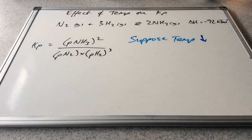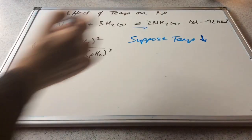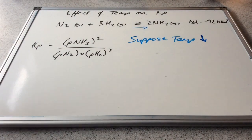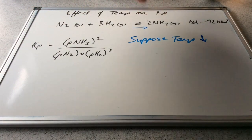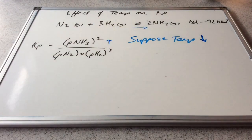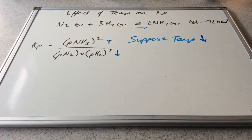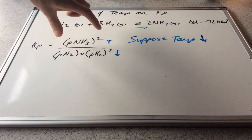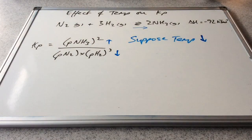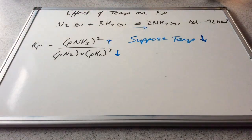Conversely, if the temperature is decreased, that favours the exothermic direction, so the equilibrium shifts to the right. We'll have a larger number of moles of ammonia, so its partial pressure increases, while the partial pressures of nitrogen and hydrogen decrease. With the numerator getting bigger and the denominator getting smaller, Kp increases — which backs up the fact that the equilibrium has moved to the right-hand side, favouring the exothermic forward reaction.